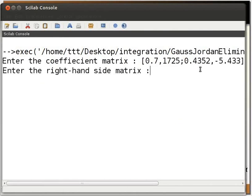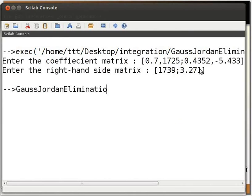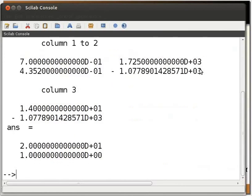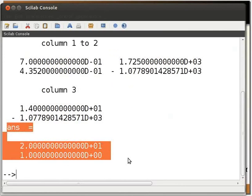The next prompt is for vector B. So, we type open square bracket 1739 semicolon 3.271 close square bracket. Press enter. Then we call the function by typing gauss-jordan elimination open parenthesis a comma b close parenthesis. Press enter. The values of X1 and X2 are shown on the console.